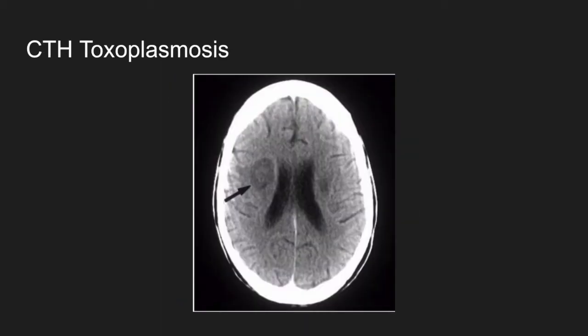For scans, this is a CT head of a patient with toxo. The classic finding is a ring-enhancing lesion with surrounding edema — this is better seen on MRI, but we'd likely get a CT in the ED. You wouldn't see significant findings in cryptococcal meningitis on a CT head. In CNS lymphoma, you'd see a focal, well-defined lesion in the gray matter.